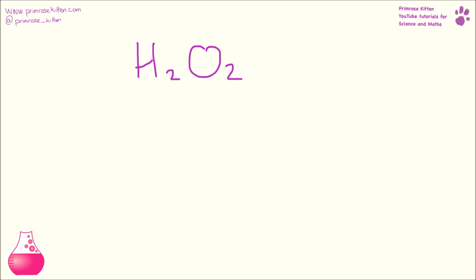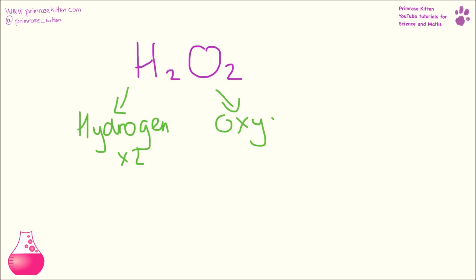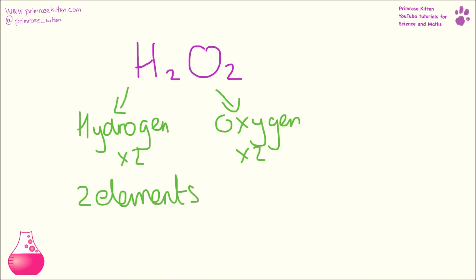Here we have hydrogen peroxide. It has hydrogen in it and there are two of them, and it has oxygen and there are two of them. So it has two elements, hydrogen and oxygen, and four atoms.